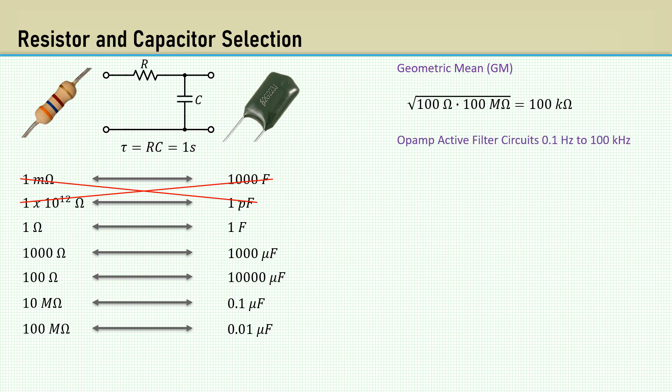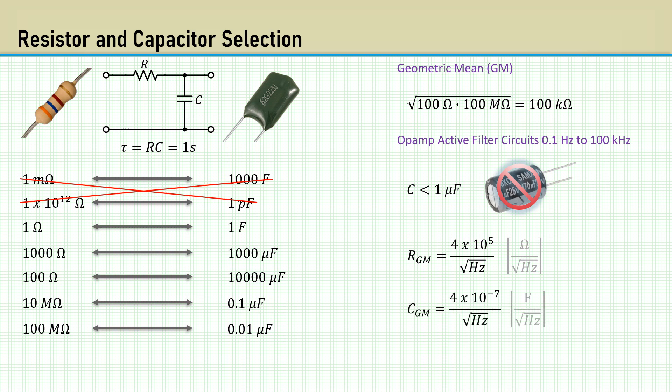Most op-amp filter circuits are in the range between 0.1 hertz and 100 kilohertz. Capacitor values should be below 1 microfarad to avoid the use of polarized aluminum electrolytics and tantalums. The author of that paper declared the best median value of the resistor to be 4 times 10 to the 5th ohms per square root hertz and 4 times 10 to the minus 7 farads per square root hertz for the capacitor. These serve as a good starting point.